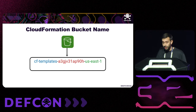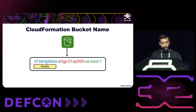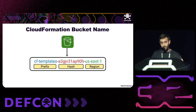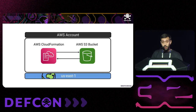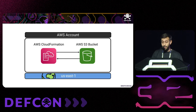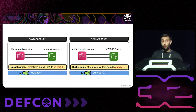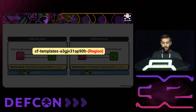The CloudFormation bucket name consists of three parts: a constant prefix string ("cf-template"), a hash that is a unique identifier per account, and a region indicating where CloudFormation was initiated. When a user uses CloudFormation in a new region for the first time, the service creates a new bucket with the same prefix and hash but a different region — giving us a semi-predictable bucket name.